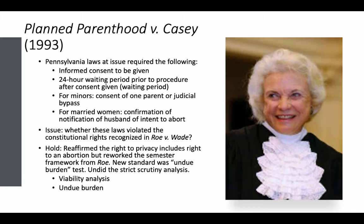The viability analysis says states cannot implement abortion restrictions prior to the viability of a fetus. They said that the trimester framework doesn't make sense given advances in science — fetuses at 23 to 24 weeks can become viable outside of the womb. If states want to start outlawing abortion at the point of viability, that was within their right, provided they allowed for exceptions involving appropriate medical judgment for the preservation of the life or health of the mother. Prior to viability, states cannot implement abortion restrictions that pose an undue burden on a woman's fundamental right to an abortion. Generally speaking, an undue burden is a substantial obstacle in the path of a woman's choice.